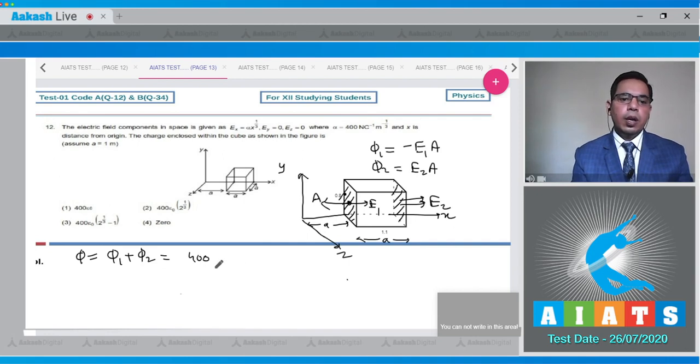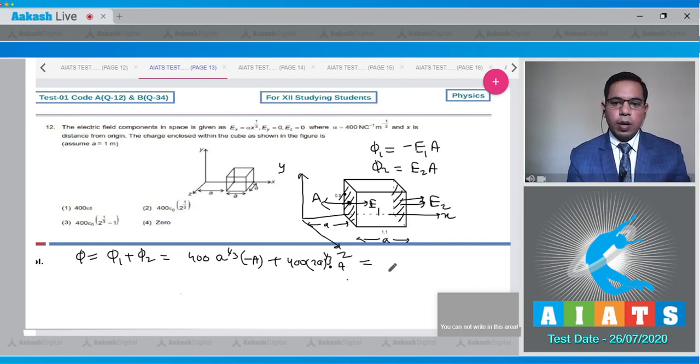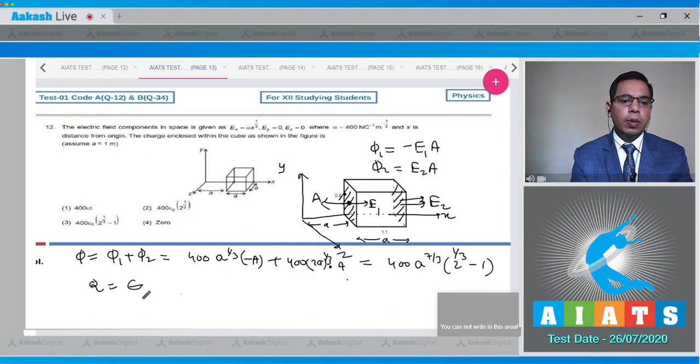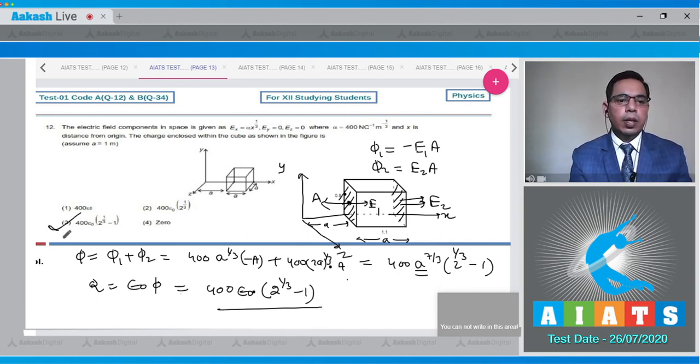If we put the values we will get that this will be 400 a to the power 1/3 into minus a plus 400 into 2a to the power 1/3 into a. Putting the value of area we will get total flux as 400 into a to the power 7/3 into 2 to the power 1/3 minus 1. Option 3 will be the correct answer.